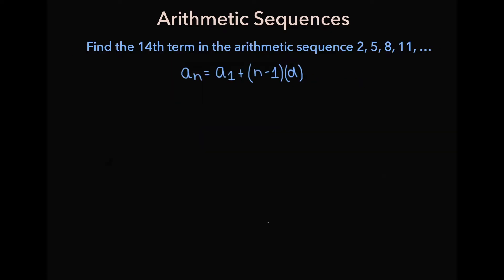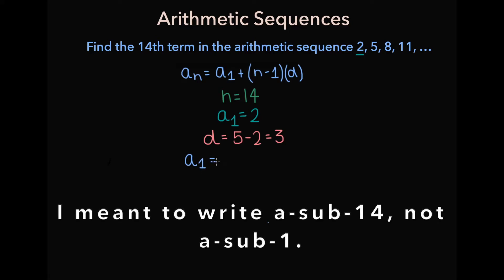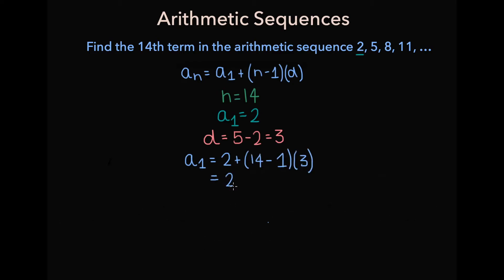Now let's put this formula to use. Find the 14th term in the arithmetic sequence 2, 5, 8, 11, and so on. We are looking for a sub 14, so n equals 14. a1 is the first term, which is 2. The common difference d is 5 minus 2, or 3. Plugging in, a sub 14 equals 2 plus (14 minus 1) times 3, which is 2 plus 13 times 3, which is 2 plus 39, or 41. The 14th term in this arithmetic sequence is 41.